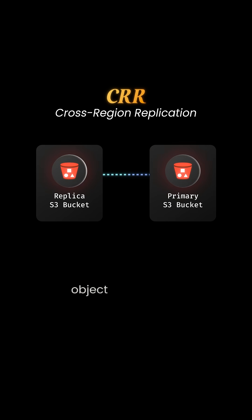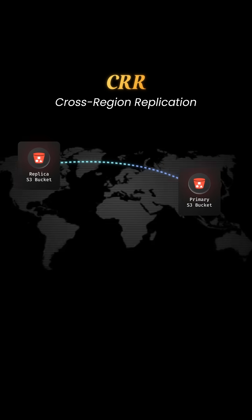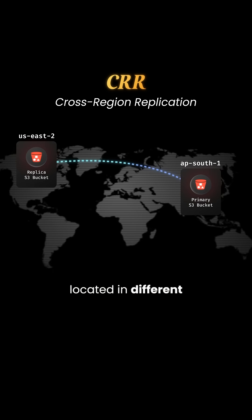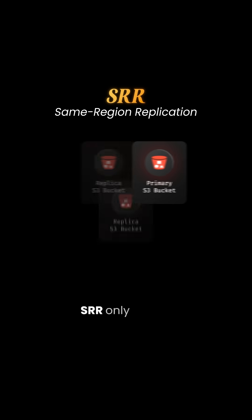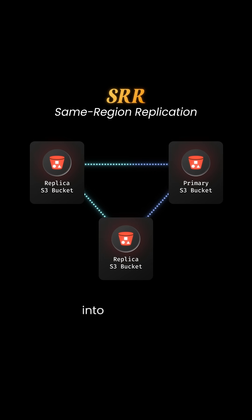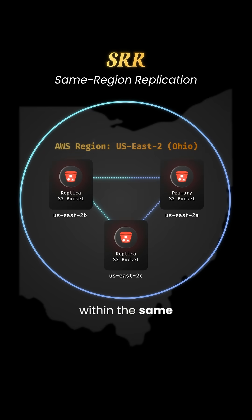CRR replicates object data across S3 buckets located in different AWS regions. Conversely, SRR only copies that object data into S3 buckets within the same AWS region.